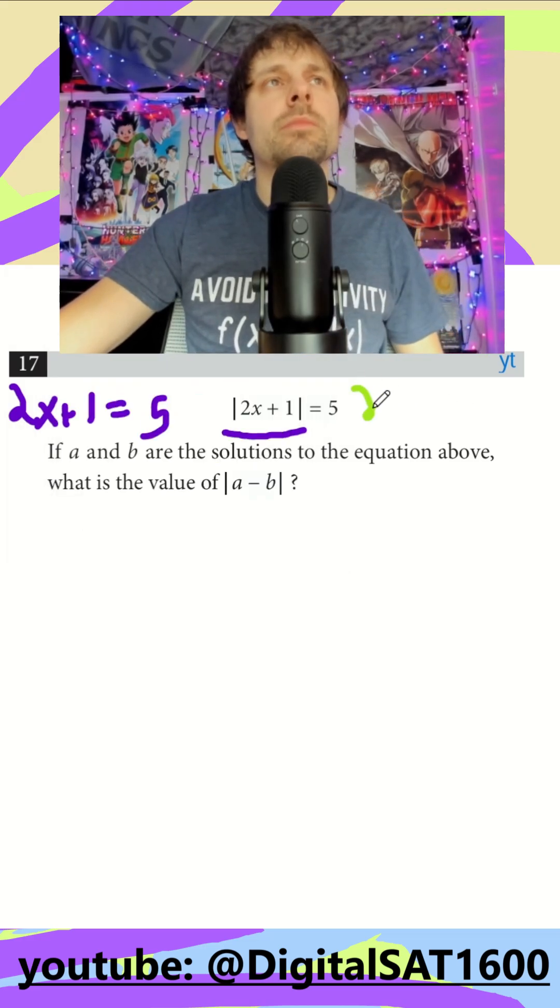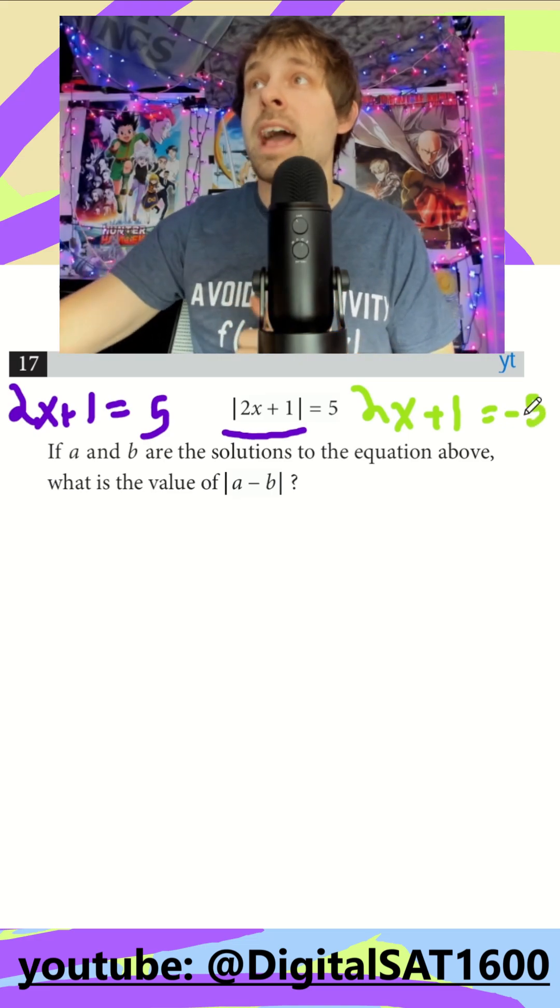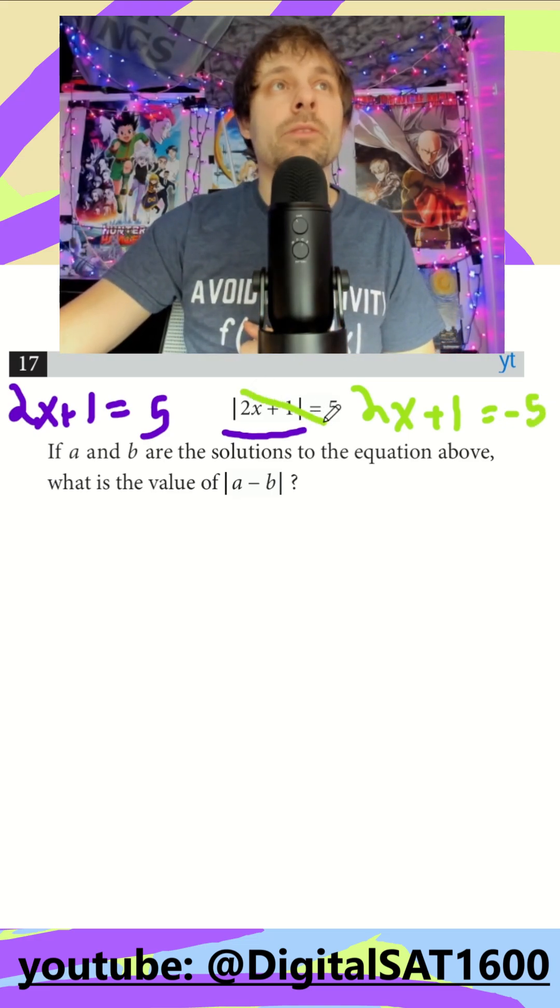And our second equation is going to be 2x plus 1 equals negative 5. So we just flip the sign of what's after the equal sign, and we can get rid of this now.